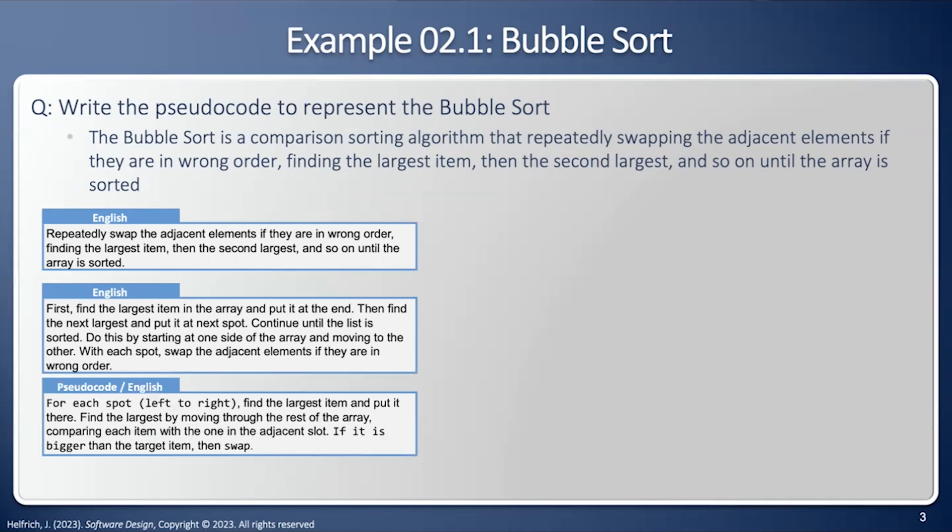The next step is a little bit pseudocode, a little bit English. So we're going to say for each spot left to right, that's very pseudocode-ish. And then we have the English description. Then we're going to say if it is bigger, that sounds like a programming construct. Notice how I'm using a fixed width font for the pseudocode and usual proportional font for the English part.